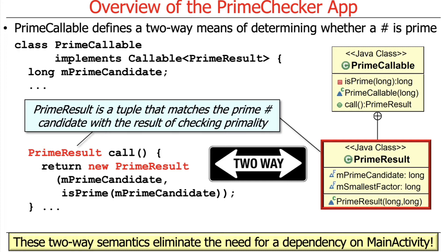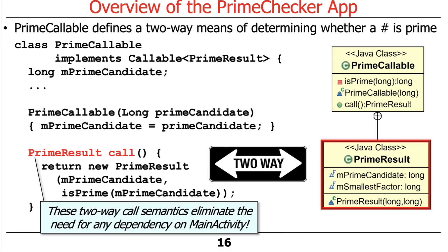The use of Callable with its two-way ability to perform computation and return a result eliminates the need for a dependency in PrimeCallable on MainActivity. In contrast, the earlier version of this app that worked with the executor interface had to pass in a reference to an activity — more coupling than we want. As a consequence, we don't have any dependencies, which cleans up our code quite a bit.